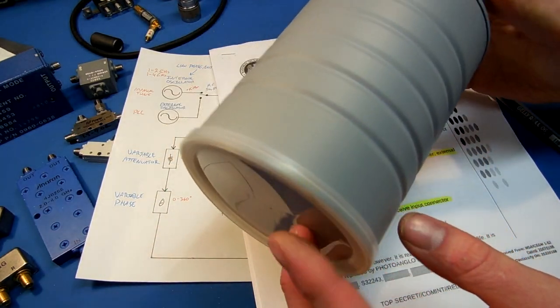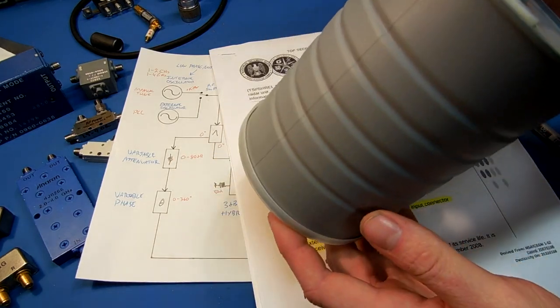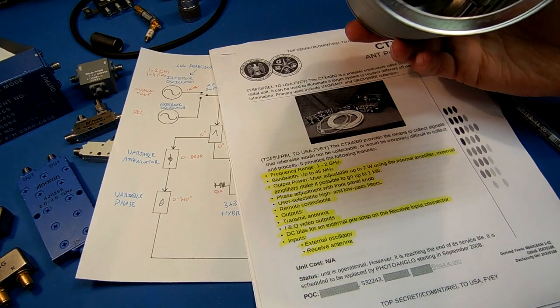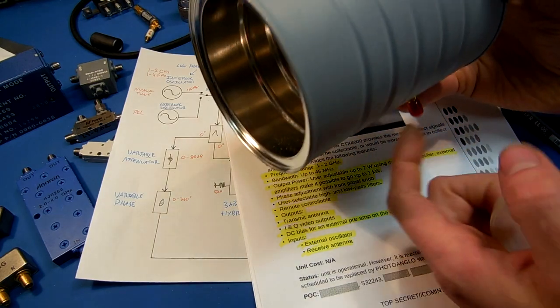So you tend to use horn antennas. This is a coffee can horn antenna for 2.4 GHz.